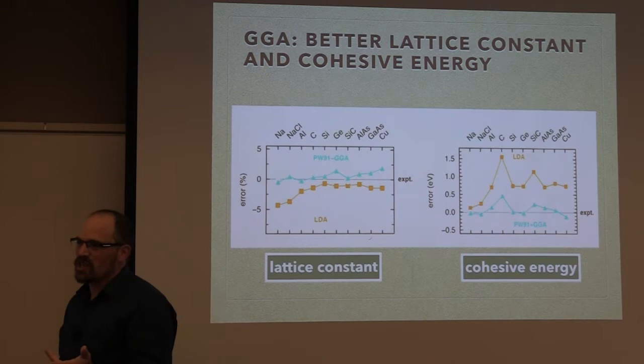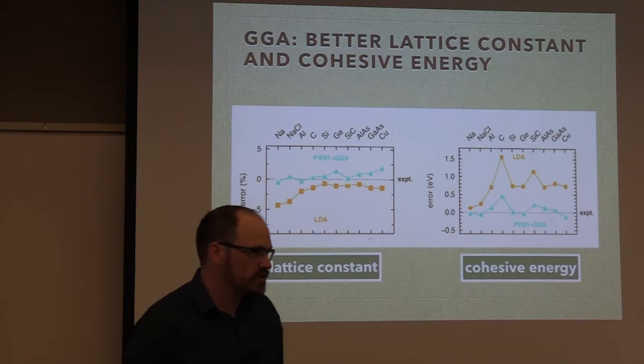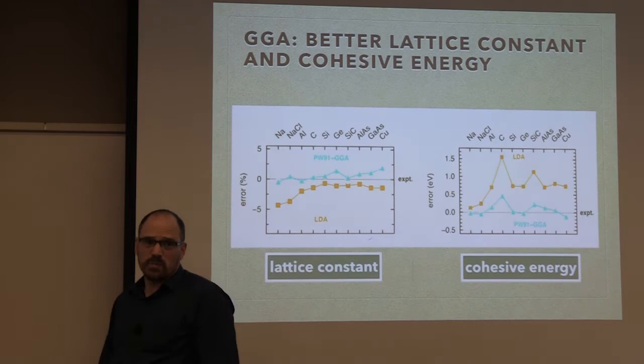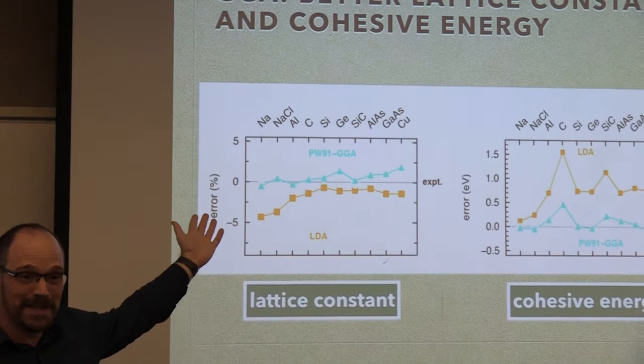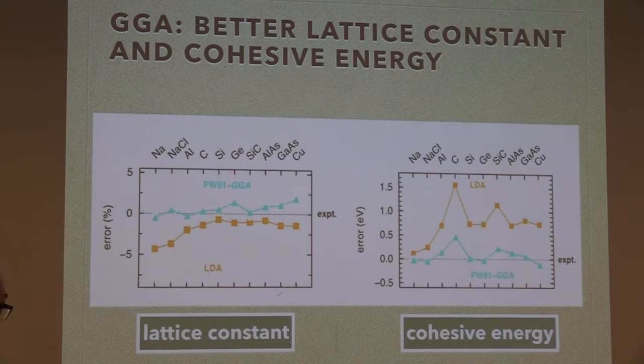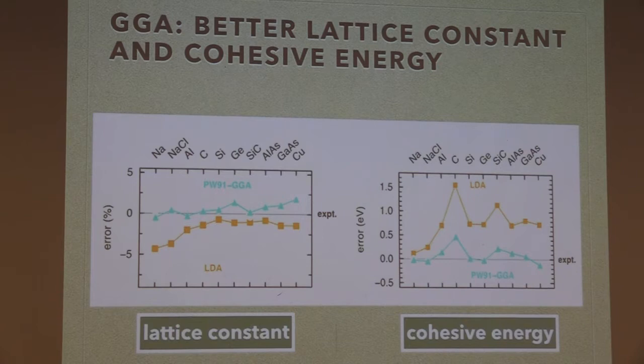In chemistry they would usually use B3LYP — that's Becke. He's the one who does those hybrid functionals — each time you see a B, it's going to be Becke. In physics we like PBE because it has been tested many, many times — it's your go-to functional, not too expensive to use, from 1996. And of course there was revised stuff because people revise things, but there is always a way to improve these things.